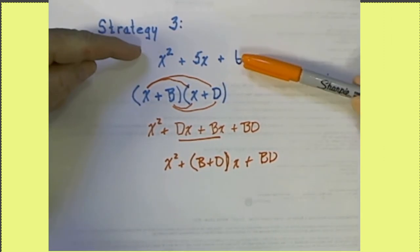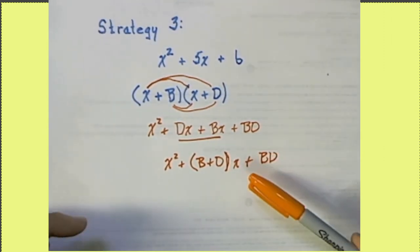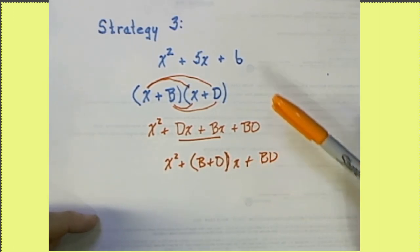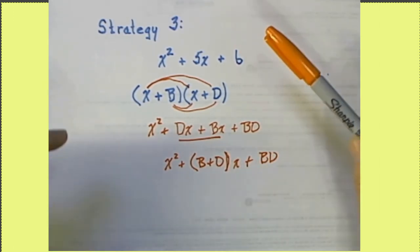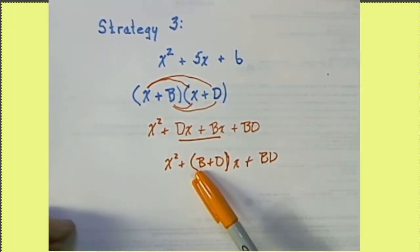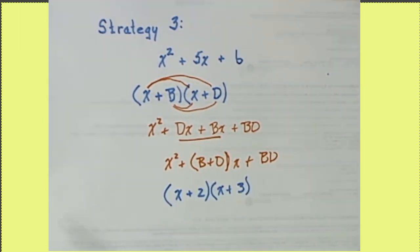So when we're trying to factor something like this, we're looking for a B and a D that multiply together and give us 6 and add together to give us 5. In this particular case, the answers will be x plus 2 times x plus 3.